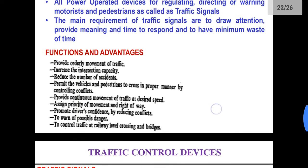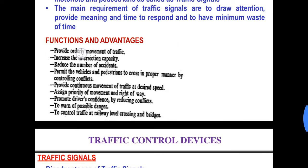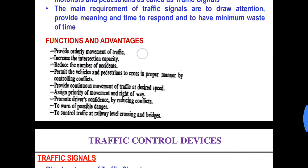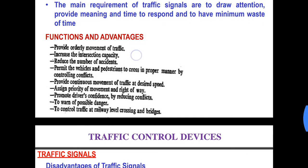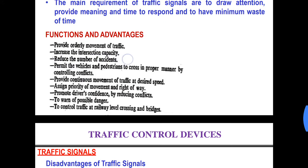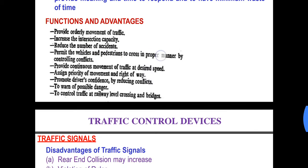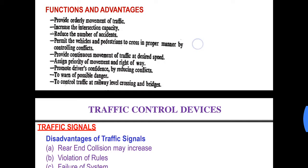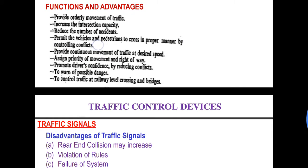The functions and advantages of traffic signals include: they provide orderly movement of traffic; they increase the intersection capacity; they reduce the number of accidents; they permit vehicles and pedestrians to cross in a proper manner by controlling the conflicts; and they provide continuous movement of traffic at design speed.